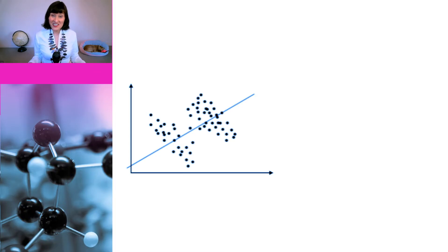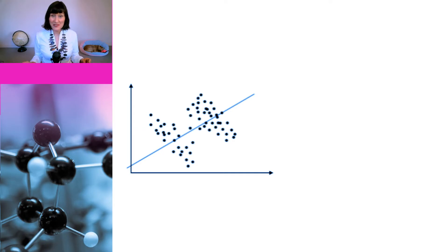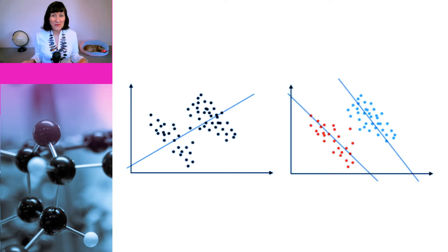This graph here shows it visually. It looks like there is a positive correlation between the data, but in fact the data is made up of two distinct subgroups. When we look at these subgroups, we see that there is actually a negative correlation for both.